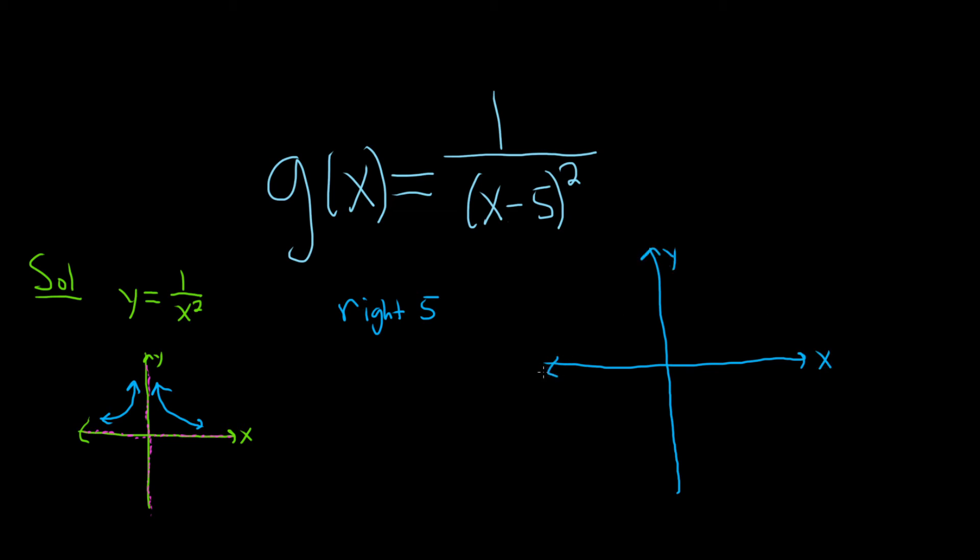Our horizontal asymptote isn't really going to shift, right? We have a horizontal line, and we're shifting it right by 5. So it's still going to be a horizontal line.